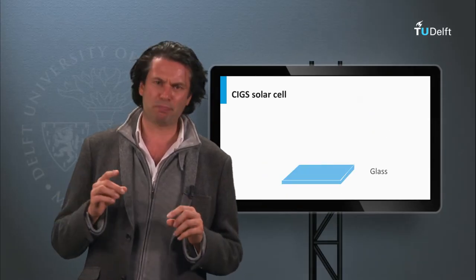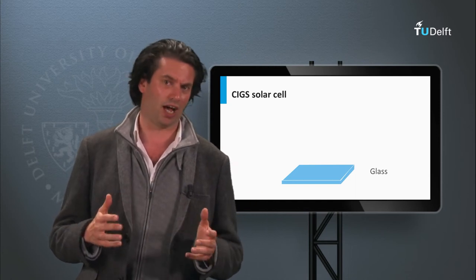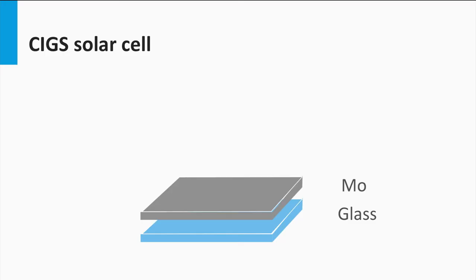Let's look at a typical CIGS solar cell structure. The substrate is glass. On top of the glass, a molybdenum layer with typical thickness of 1 micron is deposited, which acts as the back contact. On that the p-type CIGS absorber layer is deposited, with thickness ranging from 2 to 4 microns.